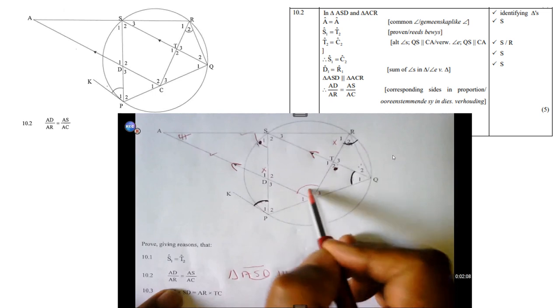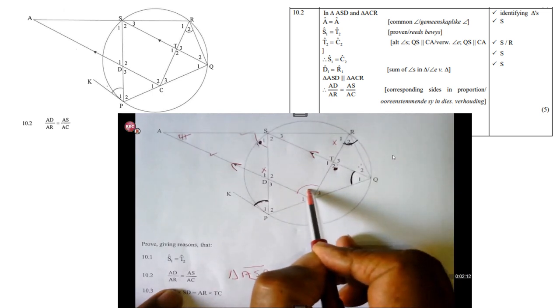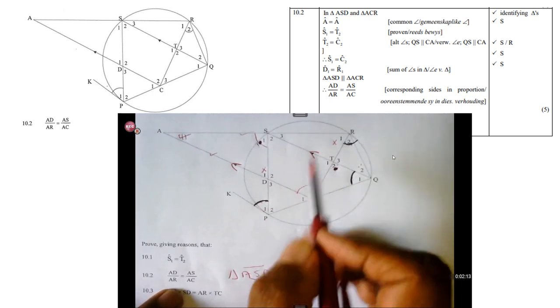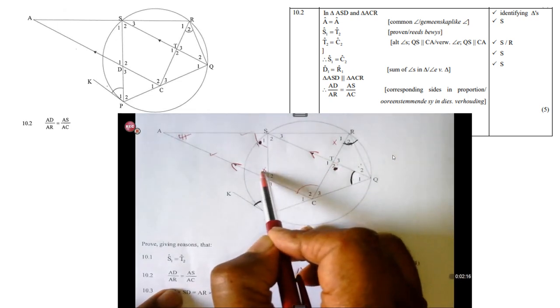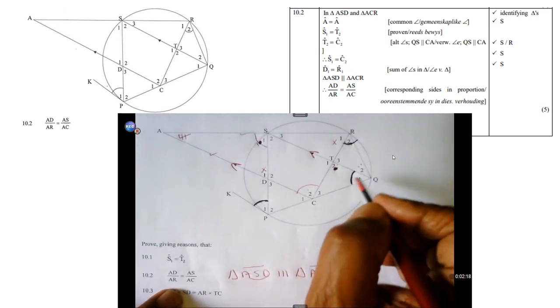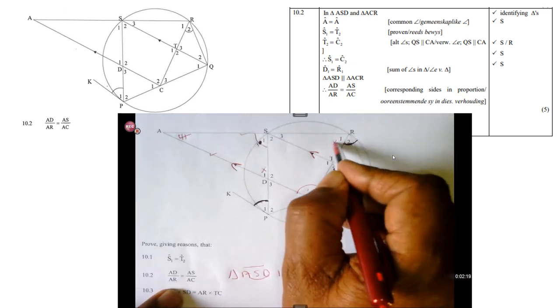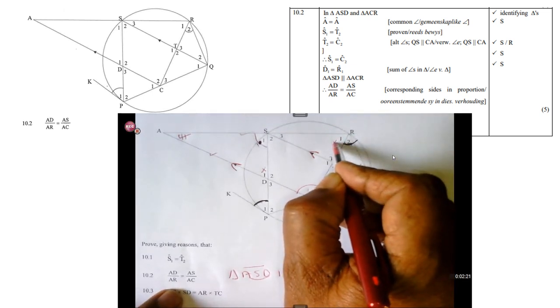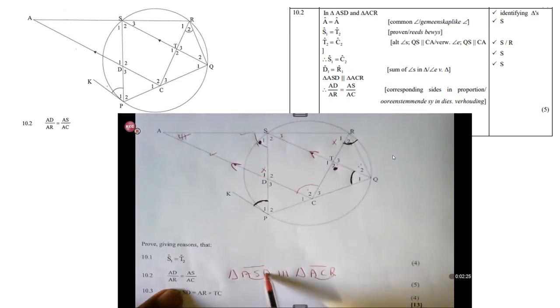Therefore, D1, look at D1 here, D1 is then equal to R1. So therefore, the two triangles are similar, and if they are similar, then I can make this deduction.